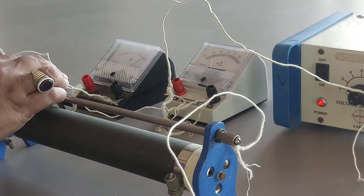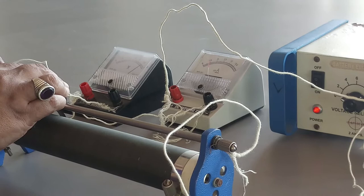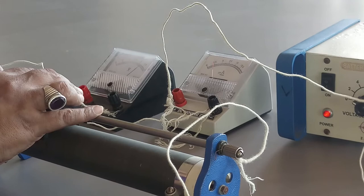As we keep on changing the position of the rheostat, we note down the readings of ammeter and voltmeter in our observation table and then plot a graph between V and I.